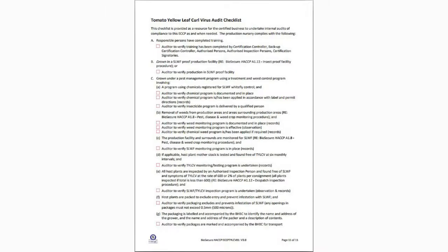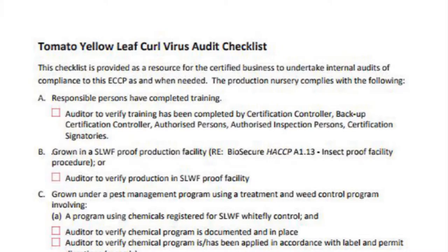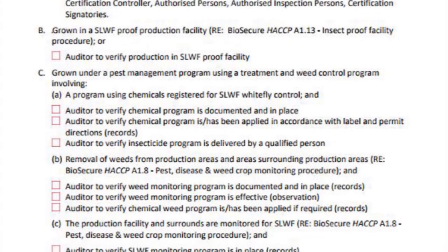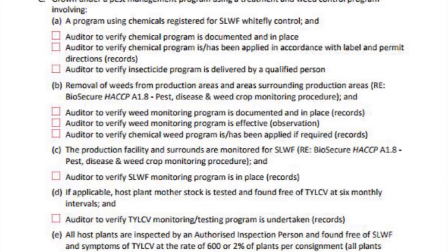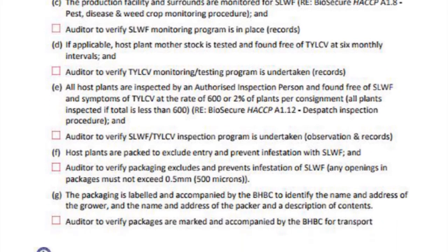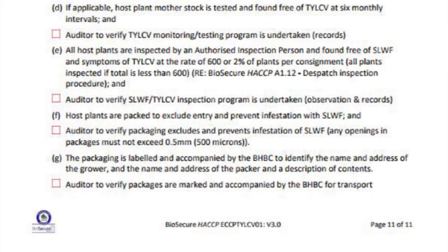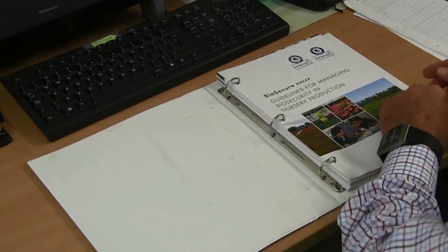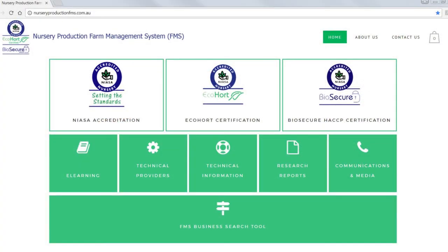The final section of an ECCP provides an audit checklist for certified businesses to conduct internal audits for compliance. It is the business's responsibility to ensure compliance to all quarantine requirements for both inter- and intra-state plant movements. More information can be found in the Biosecurity HACCP guidelines available at the Nursery Production Farm Management System website.